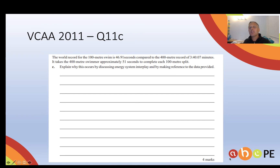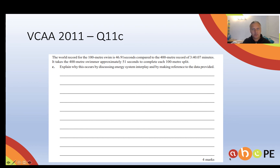The only other energy systems interplay question you're likely to see is when we compare two different events — this one is a 100 metre swim in 46.91 seconds versus the 400 metre swim. What you need to show is that you understand the 400 metre swim is longer duration and lower intensity, and therefore has increased aerobic contributions — the aerobic system is dominant in the 400 — whereas in the 100 metre swim we get significant contributions from anaerobic energy systems. Anaerobic systems produce ATP at a faster rate; the aerobic system produces ATP at a slower rate. So the longer the aerobic system is contributing dominantly to ATP production, the slower the event is going to be.